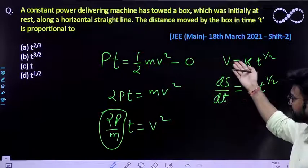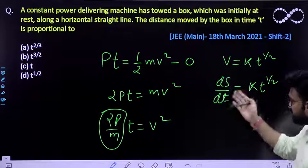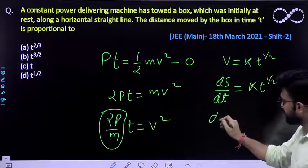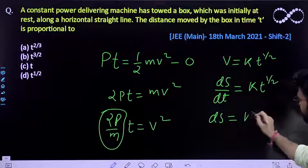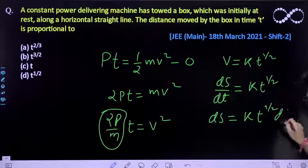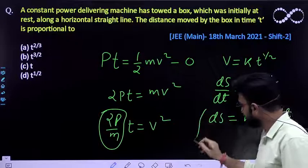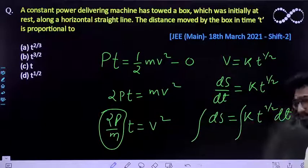We already know that velocity is none other than ds by dt, the displacement per unit time. So what will you do? Directly integrate it. So ds equals k times t to the half dt. Integrating both the sides.